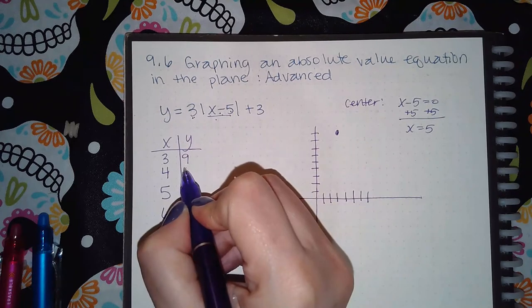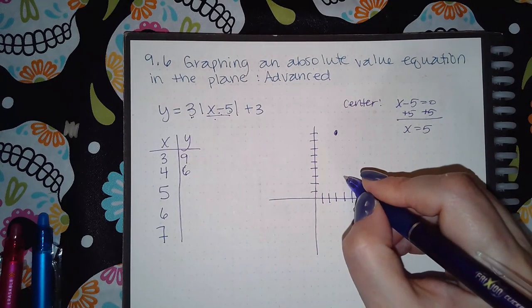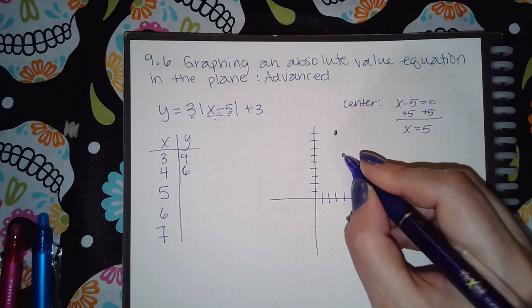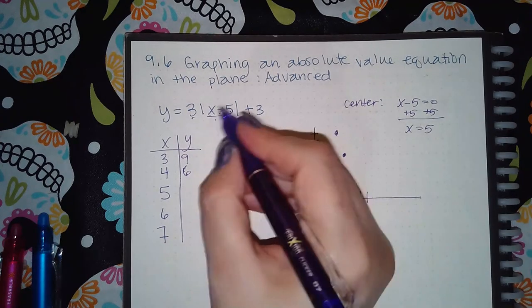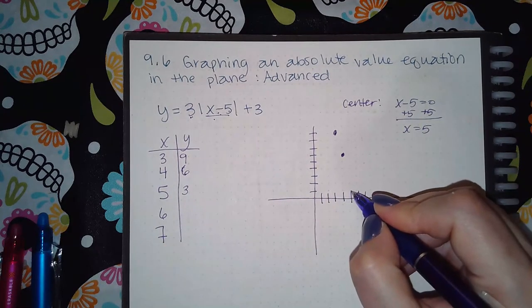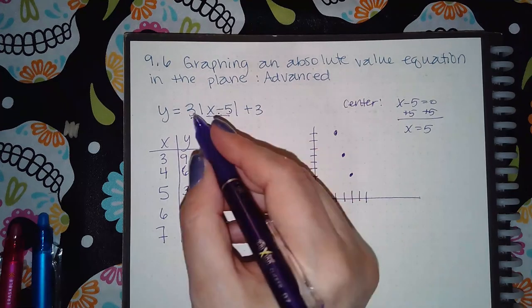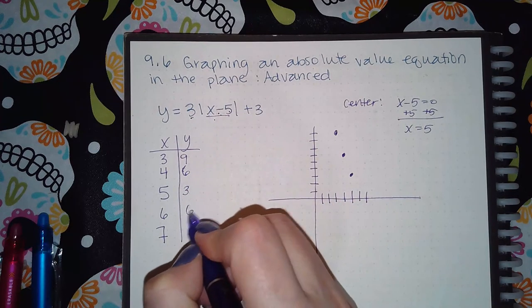three is three, plus three is six. So (4, 6). Then plug in five: I get zero, zero plus three is three. And then six: I get one times three is three, plus three is six.